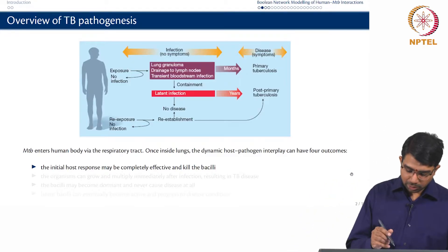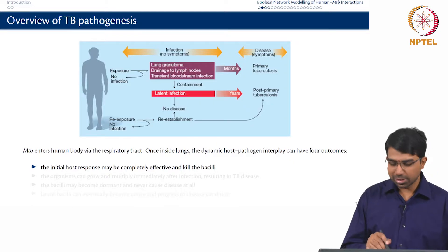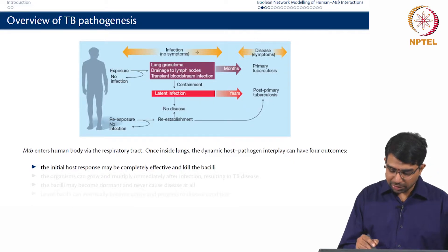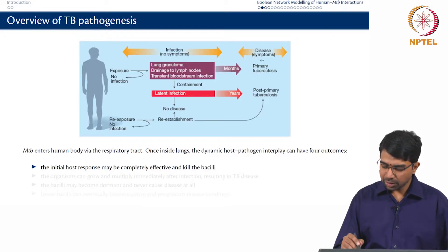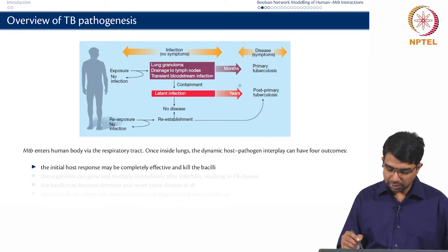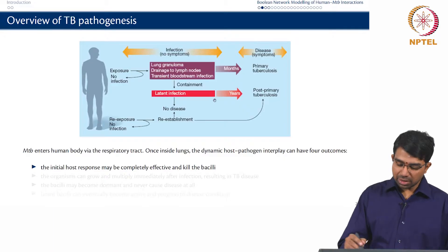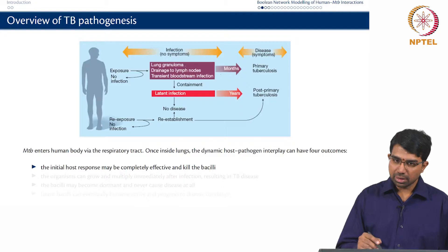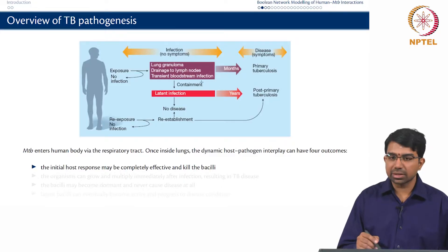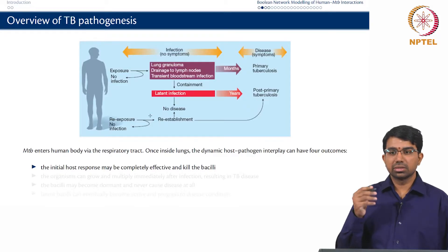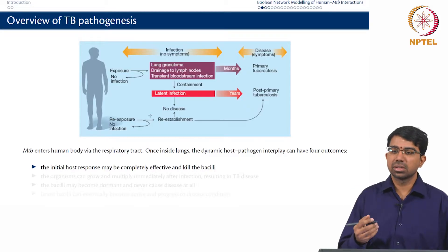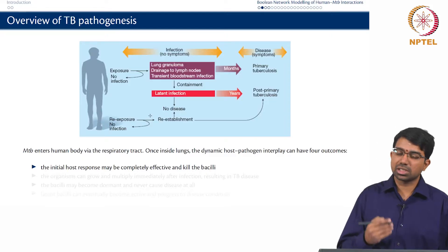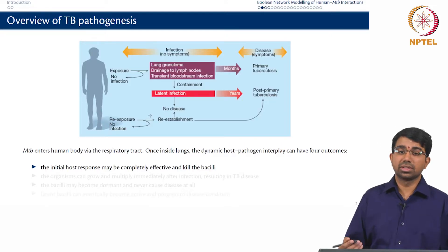Sometimes if you are very lucky, you could have no infection at all. But then you can have infection with no symptoms, or you can have active disease where you have all the symptoms of tuberculosis. A very common outcome of tuberculosis infection is latent infection, also known as persistence — the organism just persists without causing active disease.